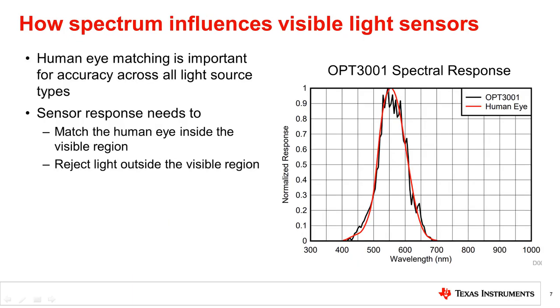For a visible light sensor that is trying to measure brightness as seen by the human eye, the spectral response of the sensor will need to match the human eye to give an accurate reading. For example, if the response does not reject wavelengths outside the visible region, then light sources that have different infrared or ultraviolet content may look the same to the eye and completely different to the light sensor.